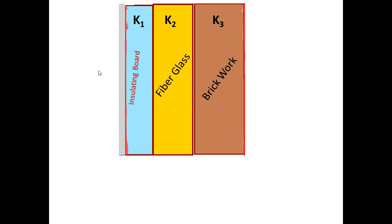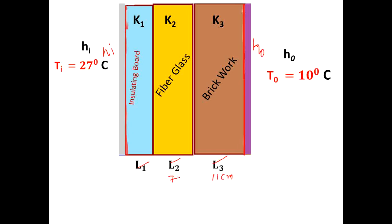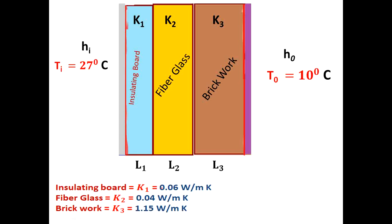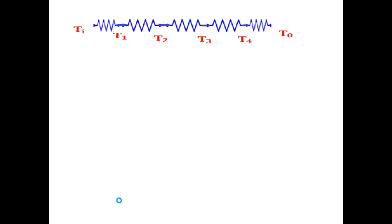It is having internal heat transfer coefficient h_i and external coefficient h_o, exposed to 27 degrees Celsius inside and 10 degrees Celsius outside. Thickness L1, L2, L3 are given: 11 centimeter (0.11 meter), 75 mm (0.075 meter), and 25 mm (0.025 meter). Insulating board thermal conductivity is given, fiberglass thermal conductivity is given, brickwork thermal conductivity is given.